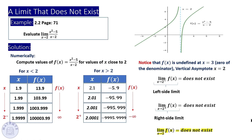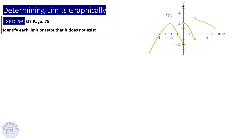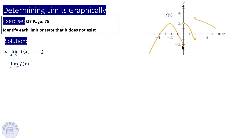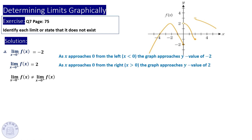In this question, identify each limit or state that it does not exist. For the limit around x = 0: approaching from the left, y-values approach -2. Approaching from the right, y-values approach 2. Since the values are different from both sides, the limit at x = 0 does not exist.